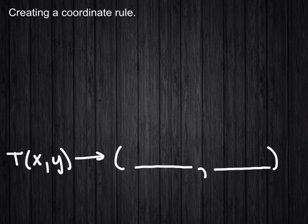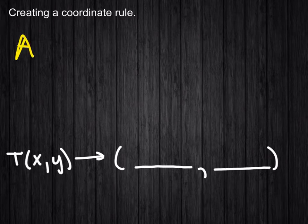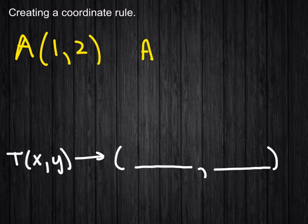Alright, let's give you a little help on this one. This one gives you two points, and I'll just make up any two points. For example, A at 1 and 2, and A prime at negative 4 and 6.